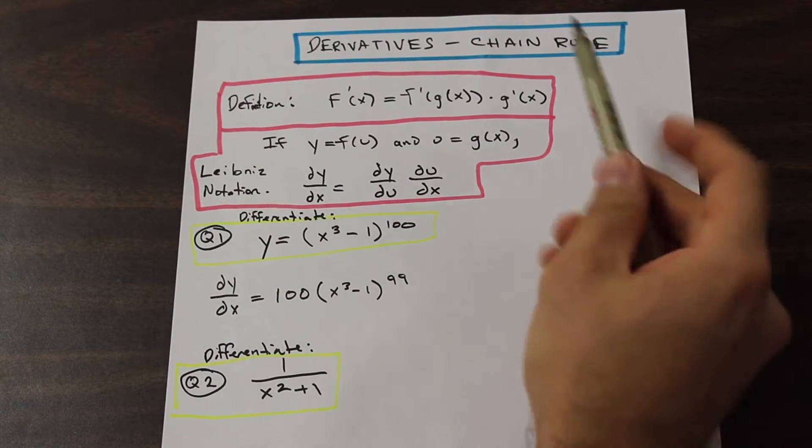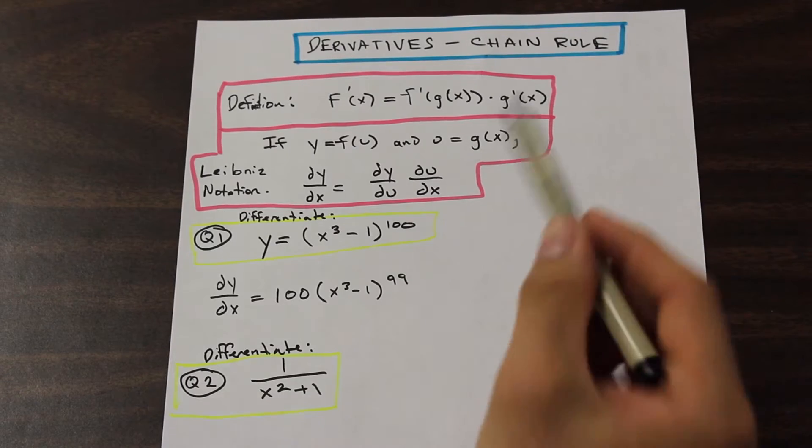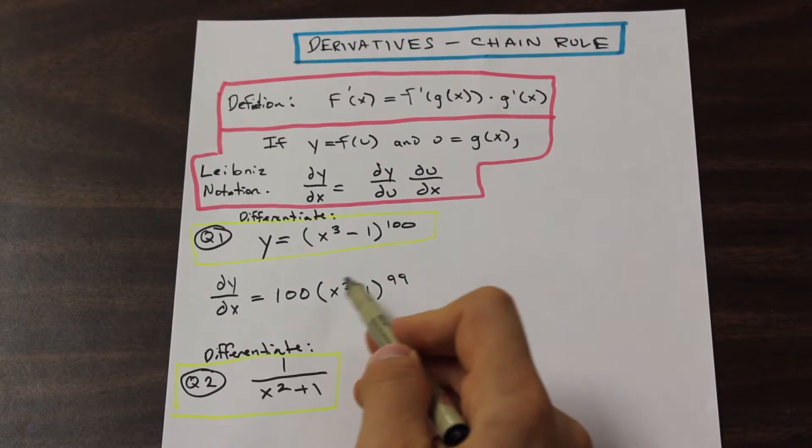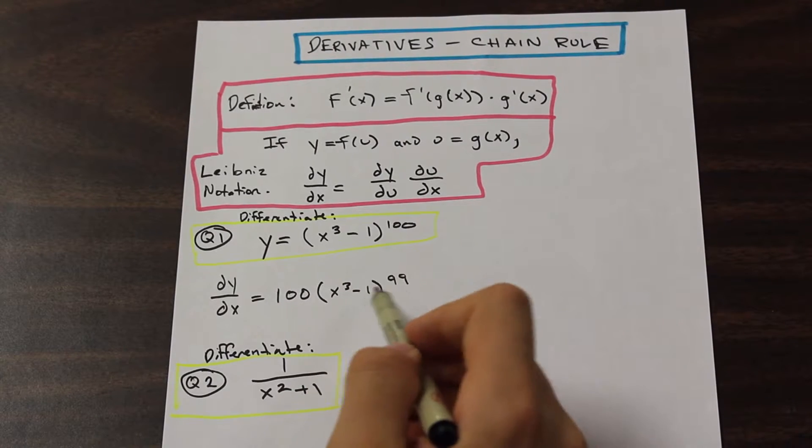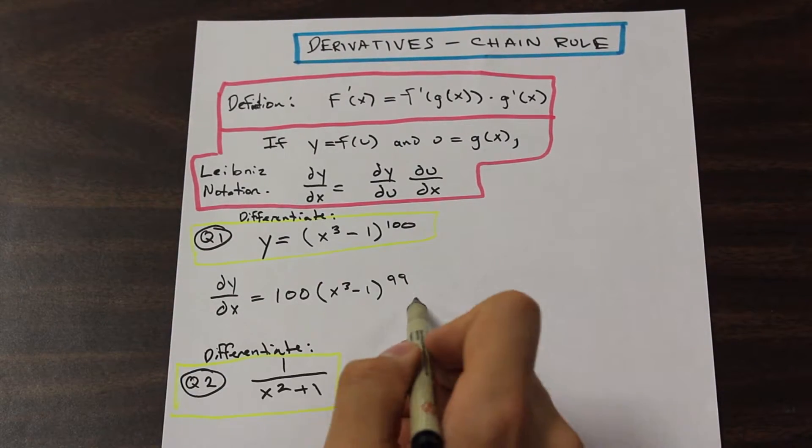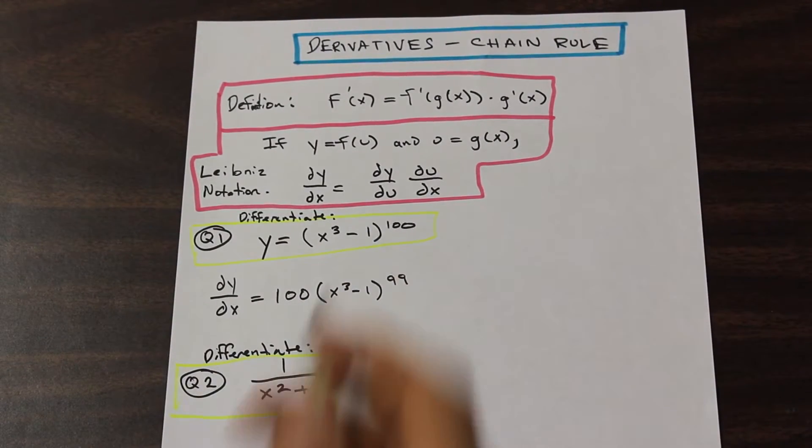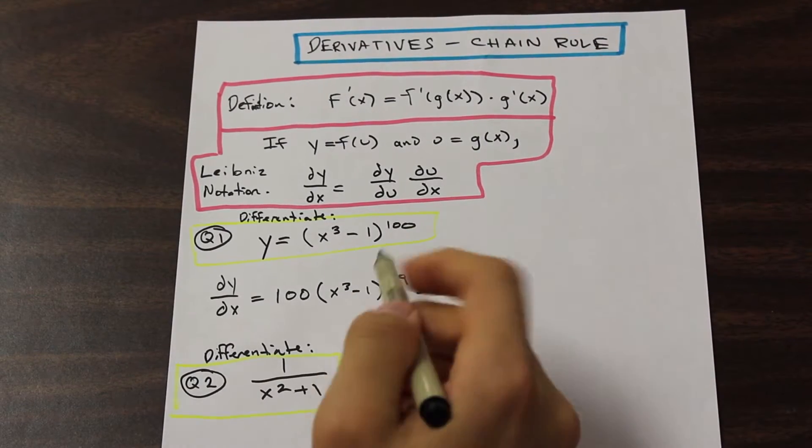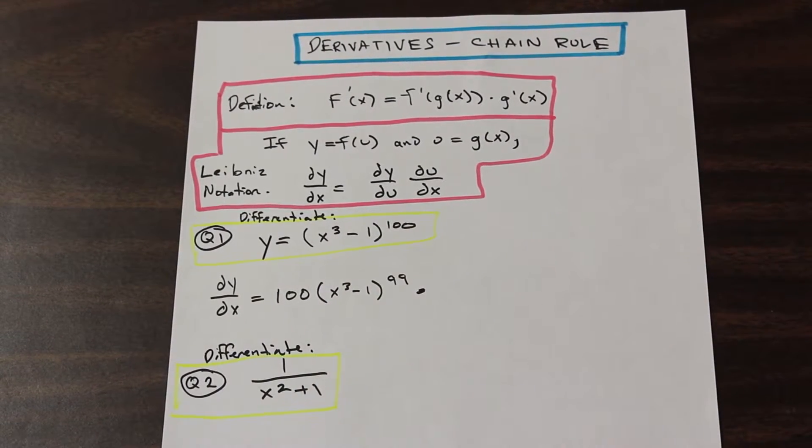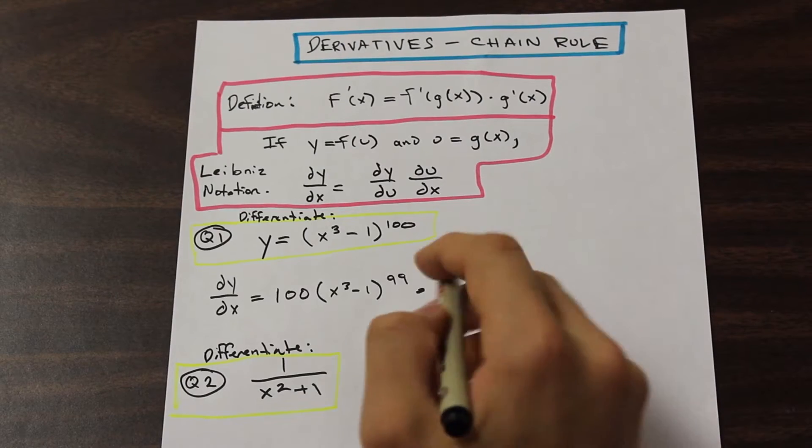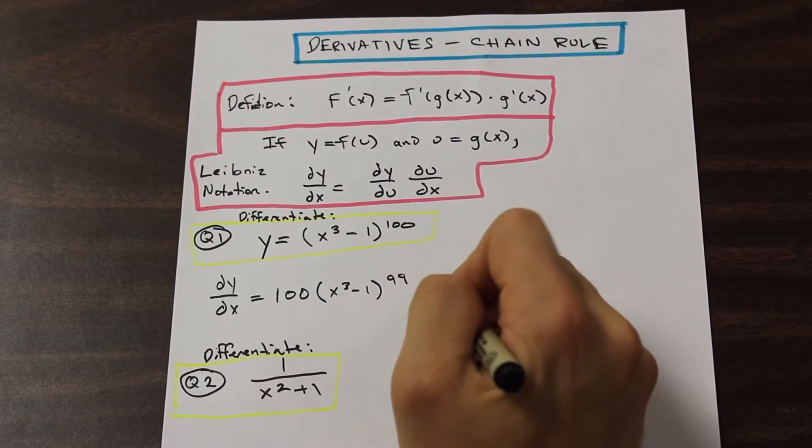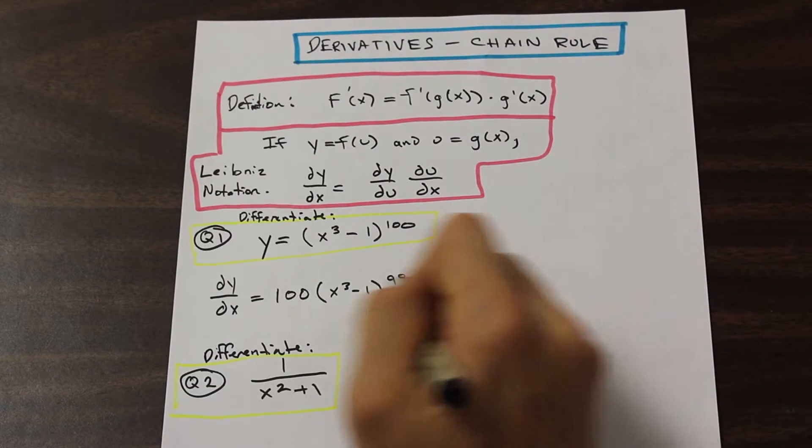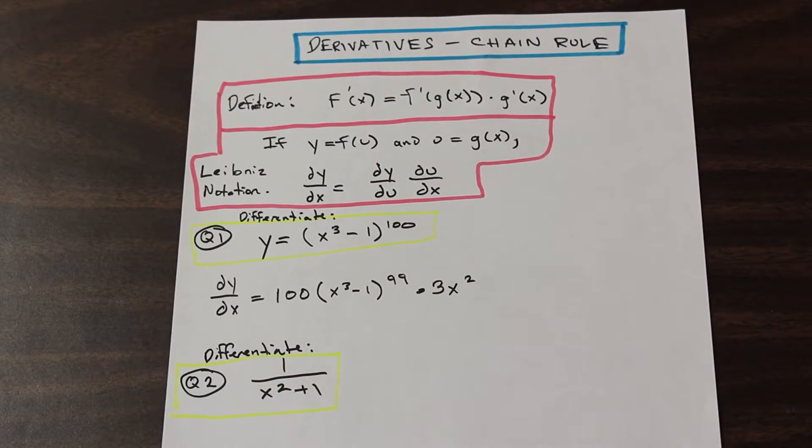So the next step is to apply this last part here, which is G prime of X. So now we're going to take the derivative of the inside of the, our inner function here, and we're going to take the derivative of that, we're going to multiply it by this function, and that's going to give us our derivative. So it's much more simple than, for example, expanding this out 100 times, which would be impossible. So let's go ahead and take the derivative of X cubed minus 1. So the derivative of X cubed, we'll bring the 3 down, so it's going to be 3X and then 3 minus 1 is 2 squared.